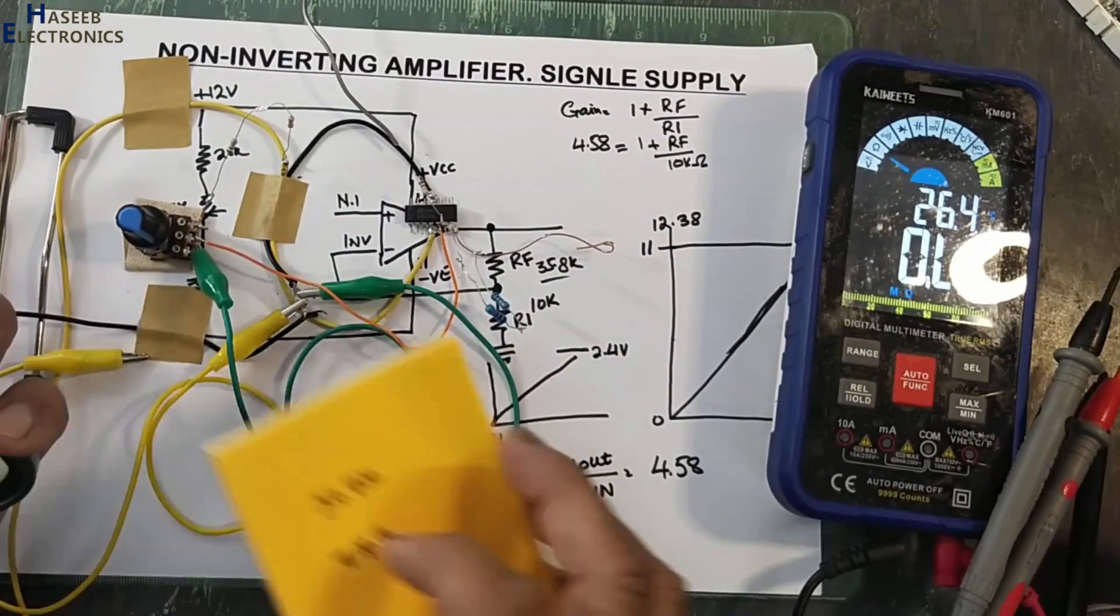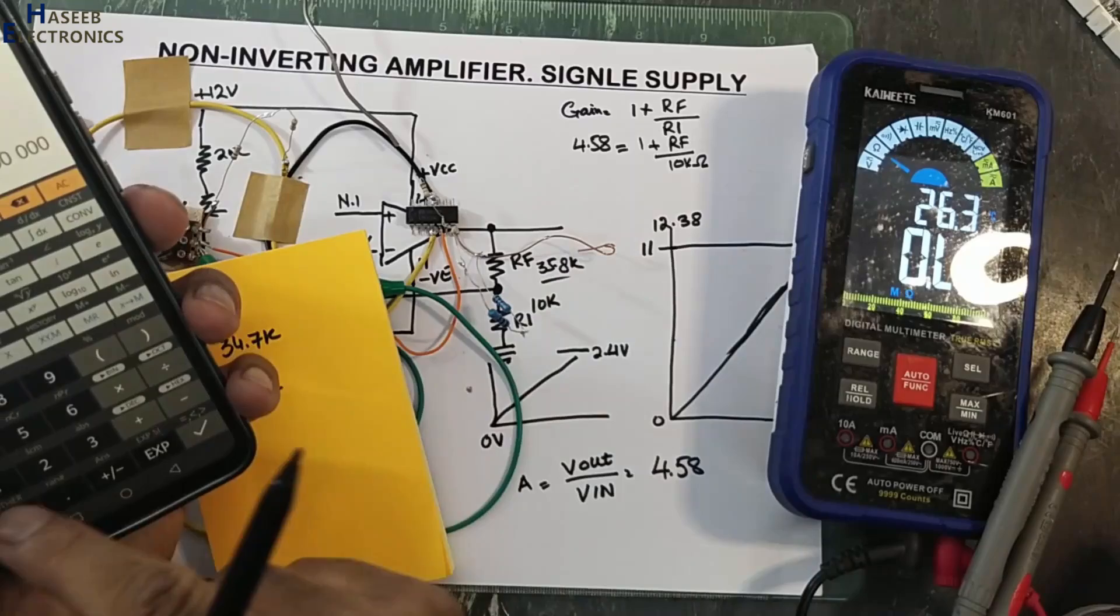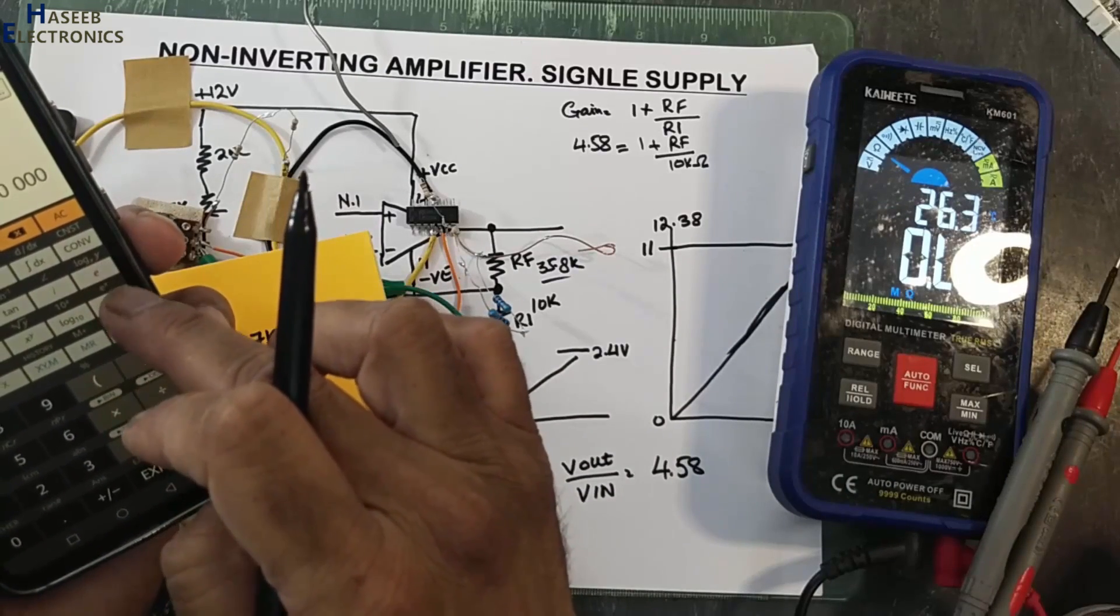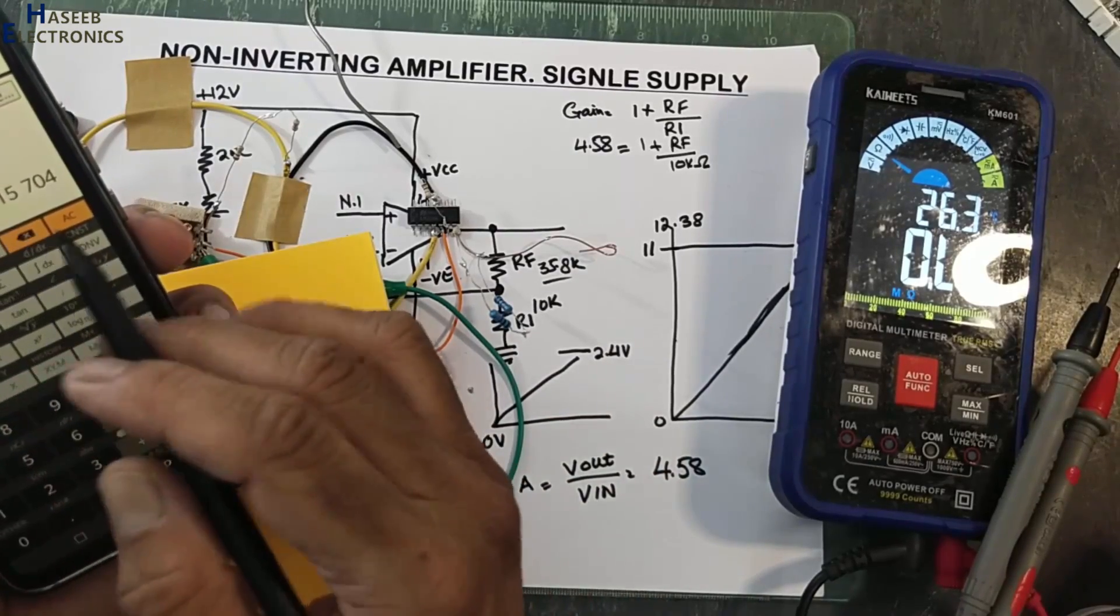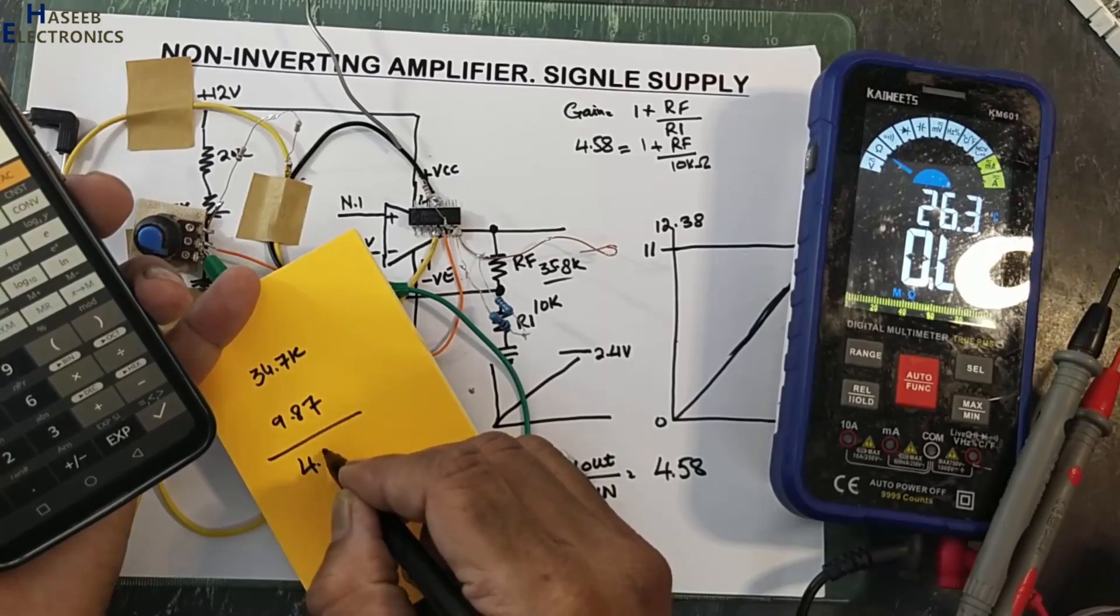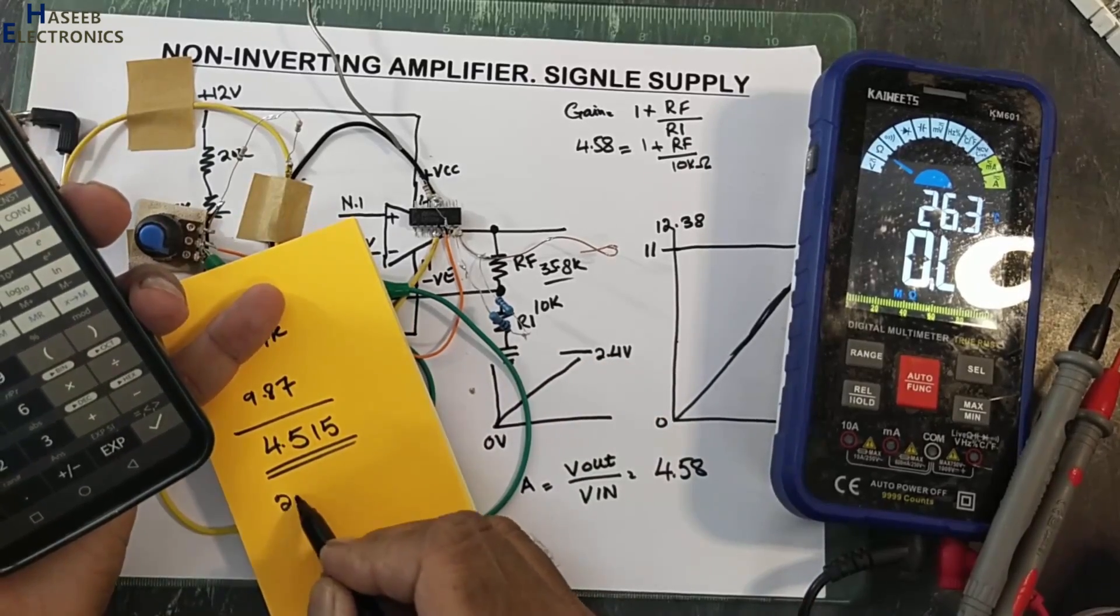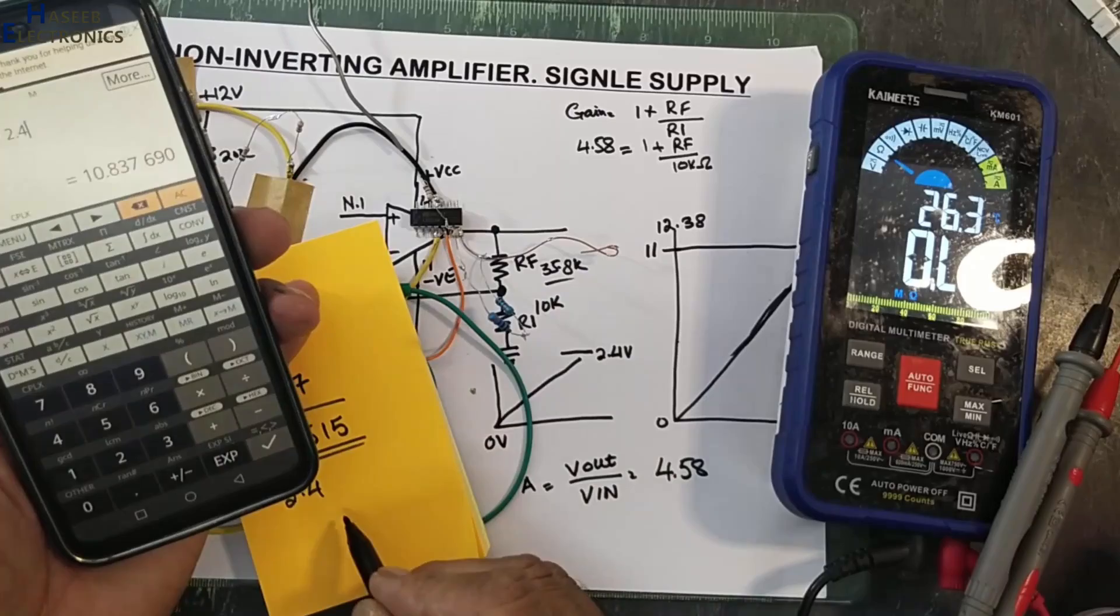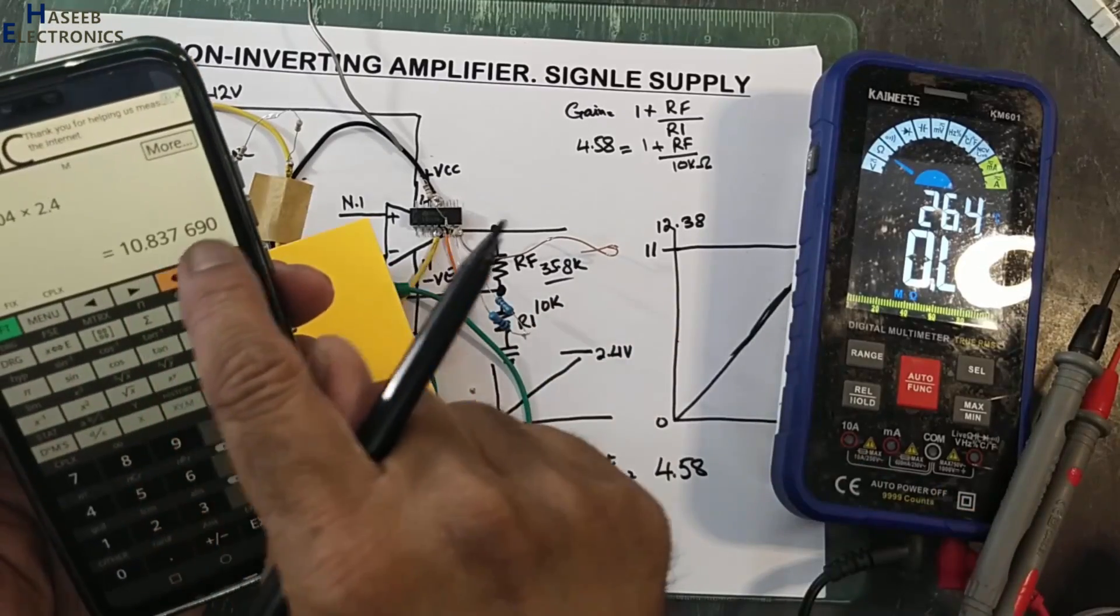Now let's calculate gain. This was the required gain. And now the gain value: 1 plus RF is 34.7 divided by 9.87. Our practical gain is now four point five one five. That means if you will provide 2.4 at input and we have gain 4.515, then 2.4 times that equals 10.837. When we have peak signal at input, the output must be 10.837. Let's check it now.